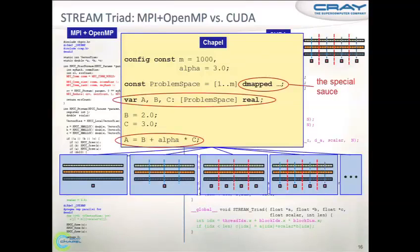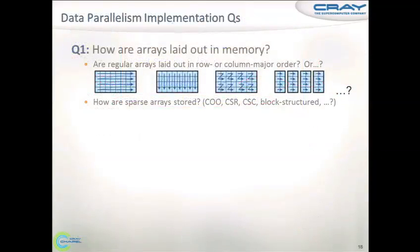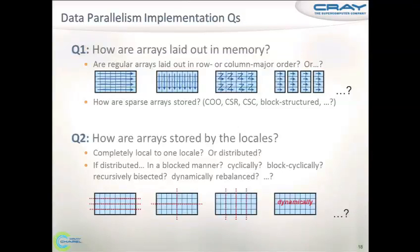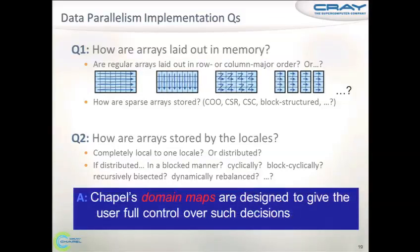All you need to change is the special source, which is our domain maps. To illustrate how domain maps work: think about two aspects of the code. First, the arrays — how do you want to implement them? The first question is how to lay them out in memory: column major, row major, Z-order, whatever. If you have sparse arrays, there are even more options. If you have distributed memory, you can put the whole thing on one locale, distribute across locales, maybe dynamically rebalance, and so on. All these details are specified by domain maps in Chapel.